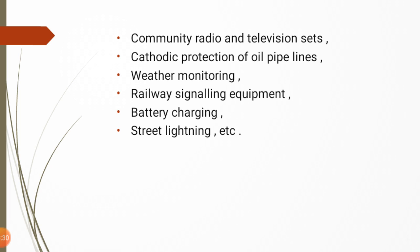Another application is cathodic protection of oil pipelines. Pipelines used for oil transportation through the earth or sea are in contact with water, which causes corrosion. To avoid this corrosion process, an external DC supply is needed. The photovoltaic system generates DC voltage, which is able to resist that corrosion process.